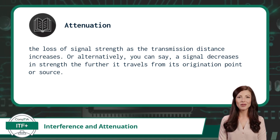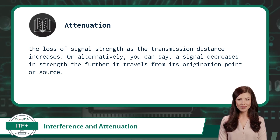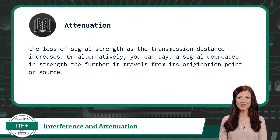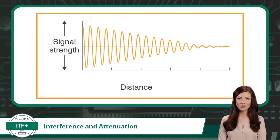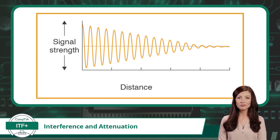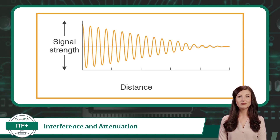The last property that can result in a weakened communication signal is attenuation — the loss of signal strength as transmission distance increases. A signal decreases in strength the further it travels from its origination point. To grasp this, imagine the light from a flashlight getting dimmer as you move further away from its source. Similarly, as a signal travels over distance, it becomes weaker the farther it travels.